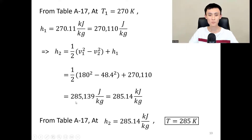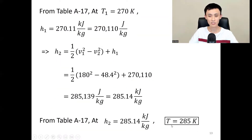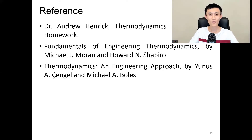Plugging in the numbers, we get h₂ equals 285,000 J/kg. Moving the three zeros back, that's about 285.14 kJ/kg — this is our final enthalpy. Looking up the air table again, when enthalpy is 285.14 kJ/kg, the temperature is 285 K. So our final exit temperature is 285 K. That's all for today — hope you learned a lot, thanks for watching, I'll see you next time, bye!